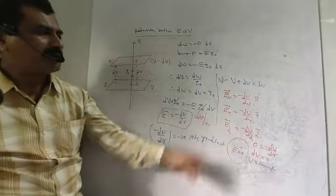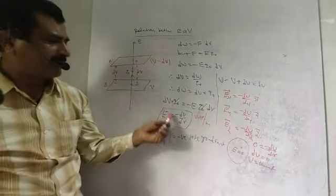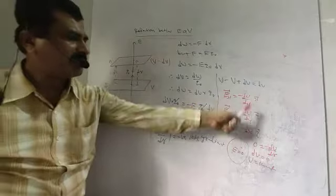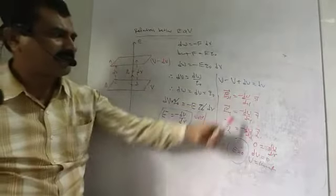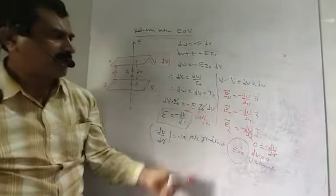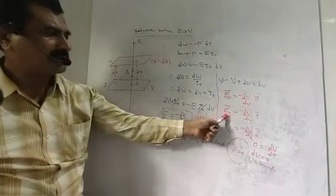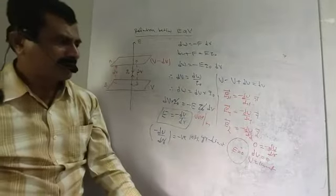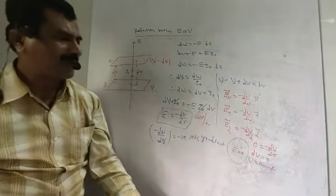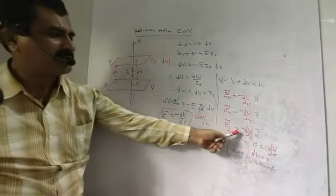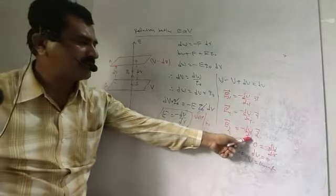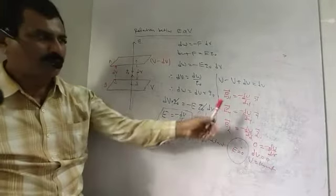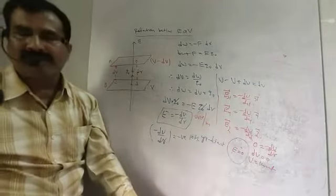Looking at the electric field in x, y, z coordinates: along the x-axis, Ex equals minus dV by dx into x-cap; along the y-axis, Ey equals minus dV by dy into y-cap; along the z-axis, Ez equals minus dV by dz into z-cap. These are the components of the electric field.